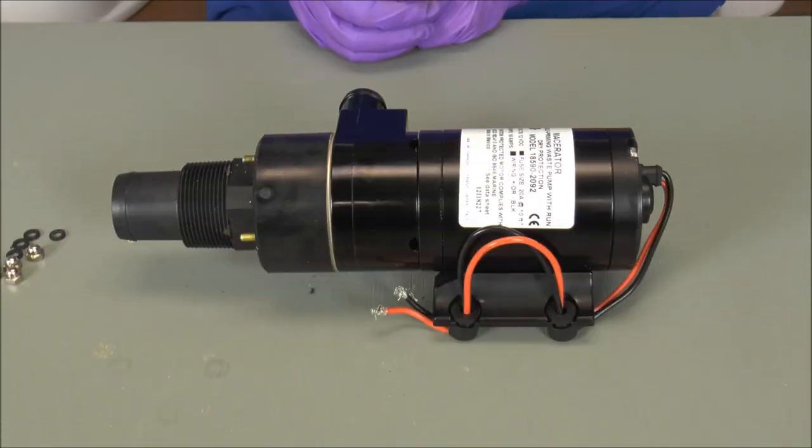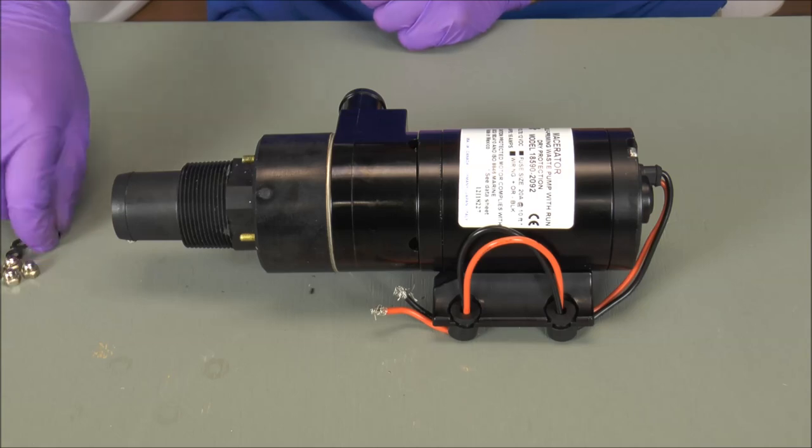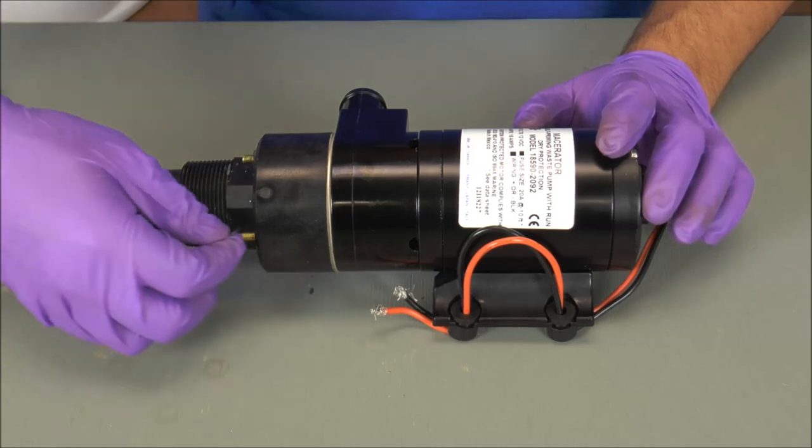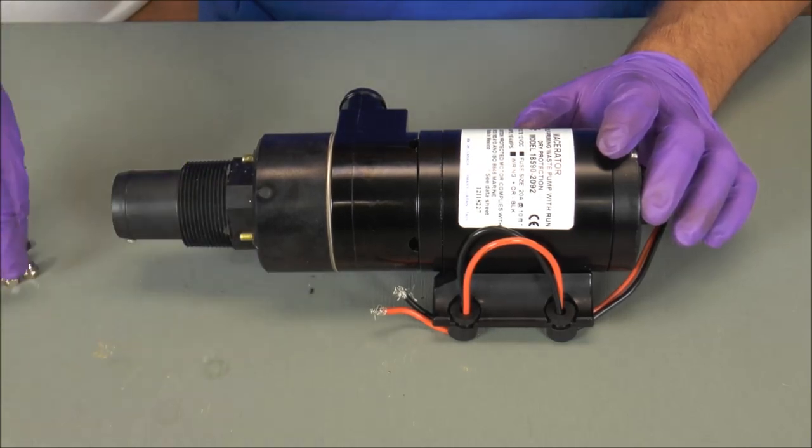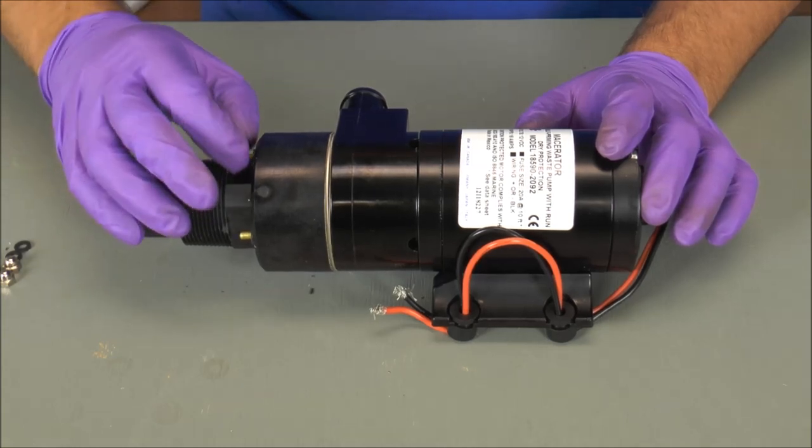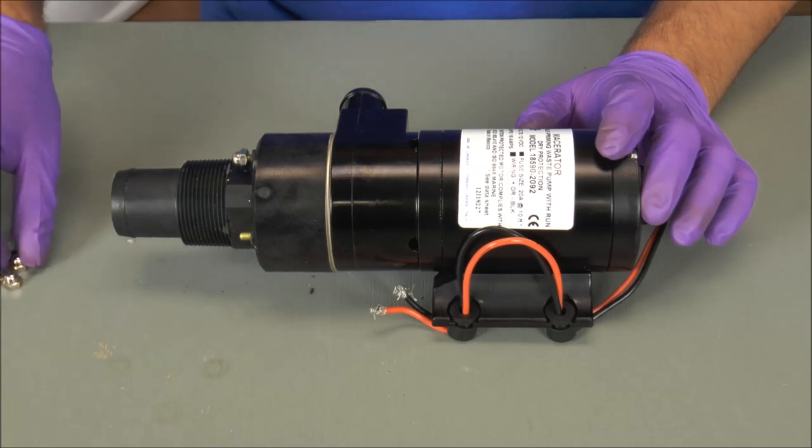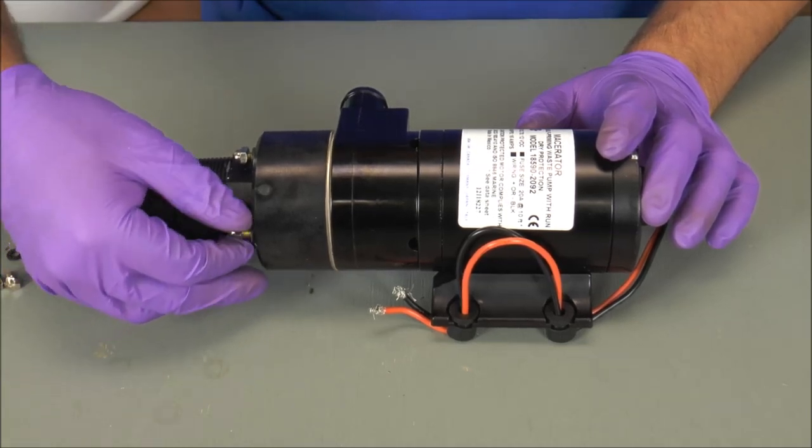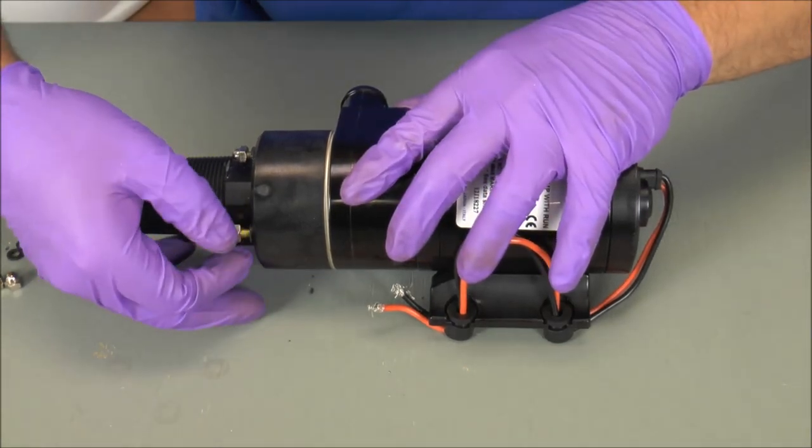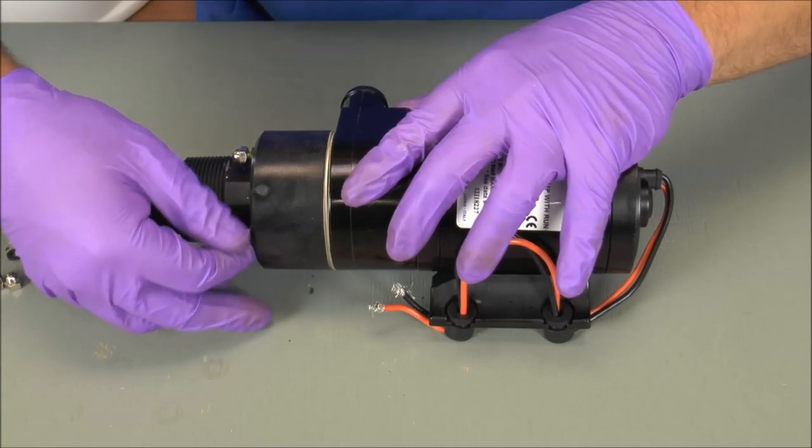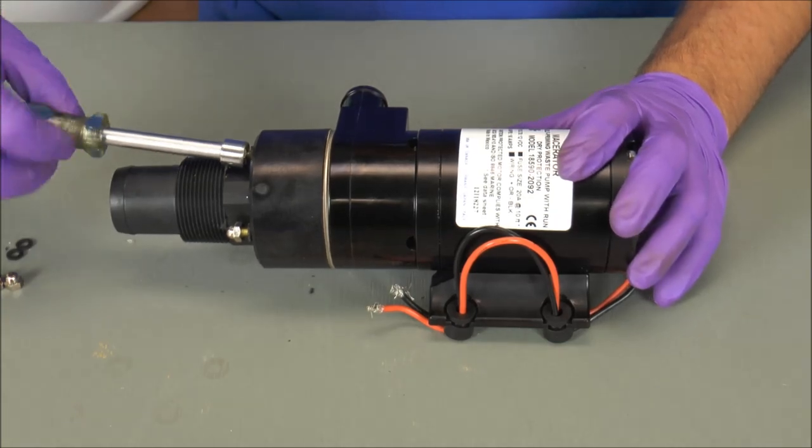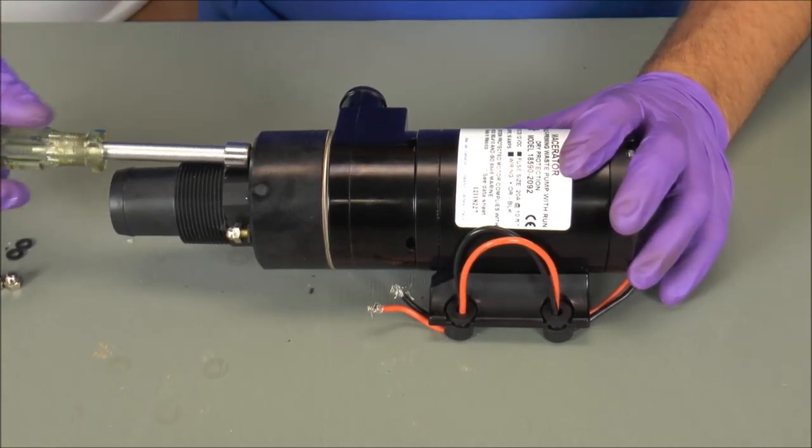So the final step is reinstalling the fiber washers and the acorn nuts. You take the fiber washer, slide it all over the stud, and then you take the acorn nut, and what I like to do is just get a couple threads and then I'll tighten it down afterwards with my 3/8 inch nut driver. So just get a couple of threads.